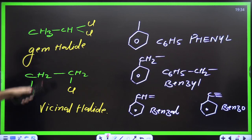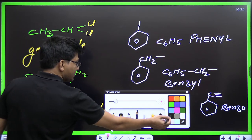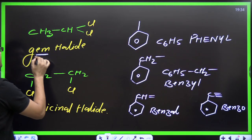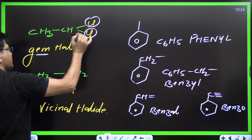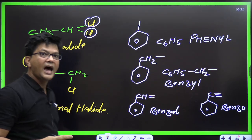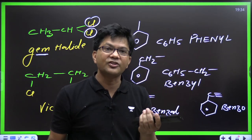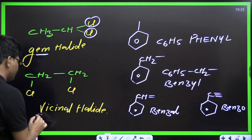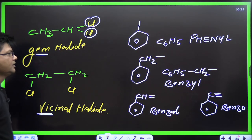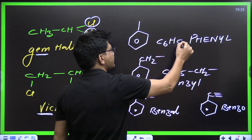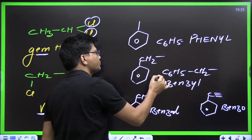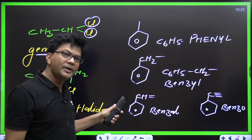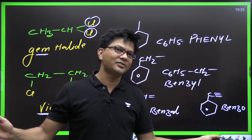This is a gem dihalide. In my village, people say 'game' instead of 'gem' — they are on the same carbon, close to each other. When they have a vicinal (jealous) factor — meaning the halogens are on adjacent carbons — it is a vicinal halide. Also remember: C6H5 is phenyl, but C6H5CH2 is benzyl.